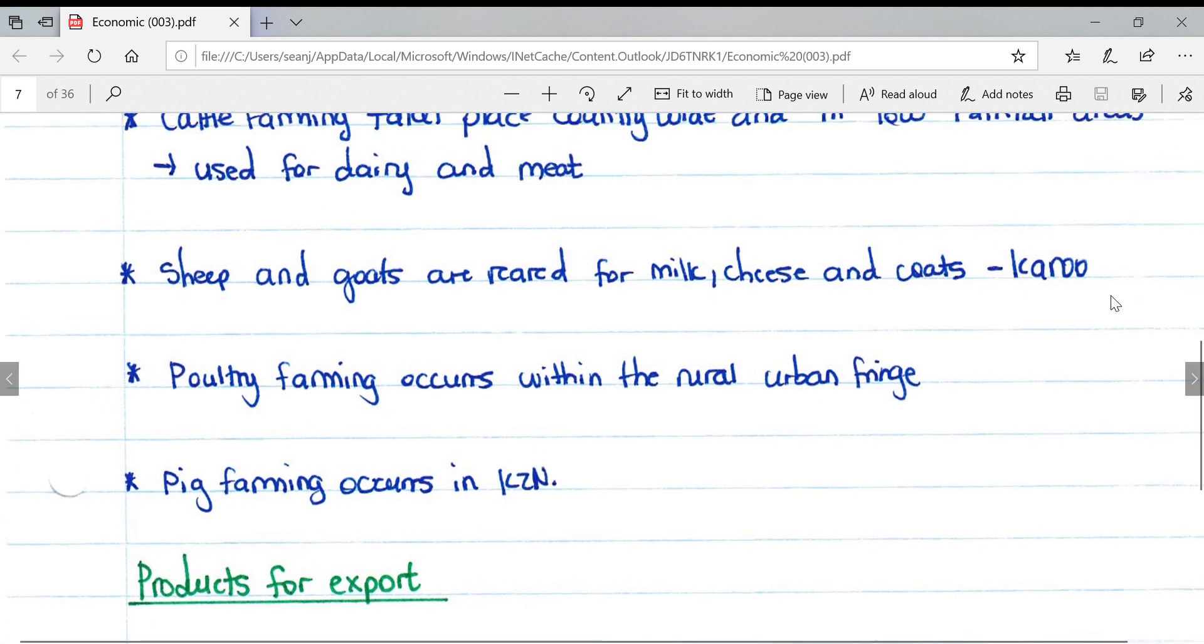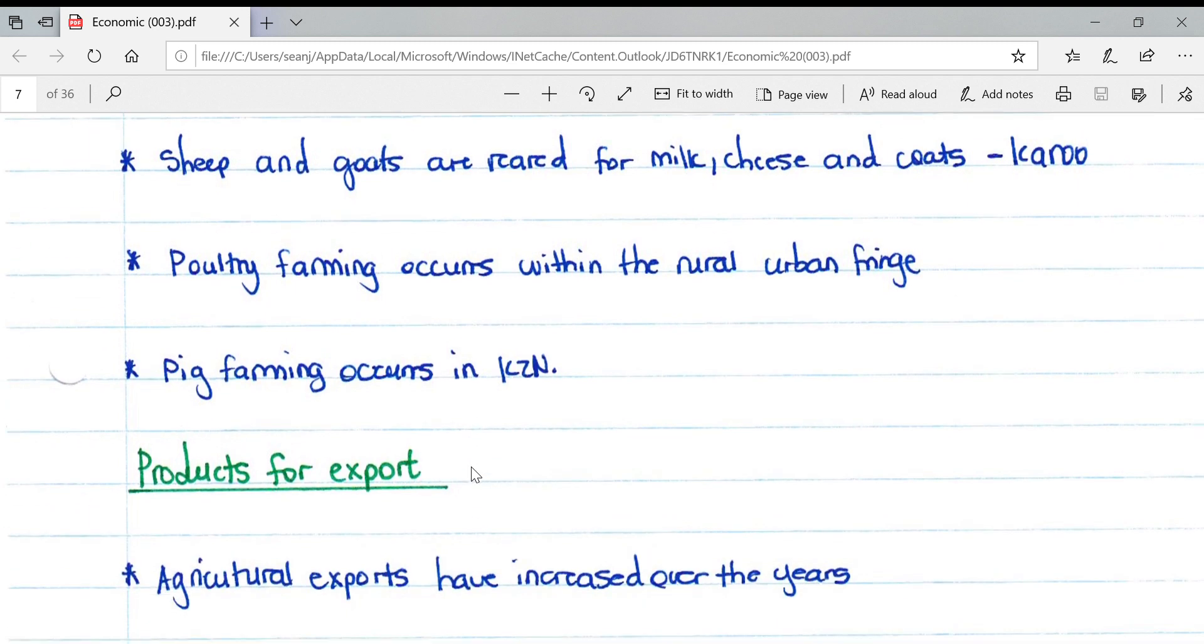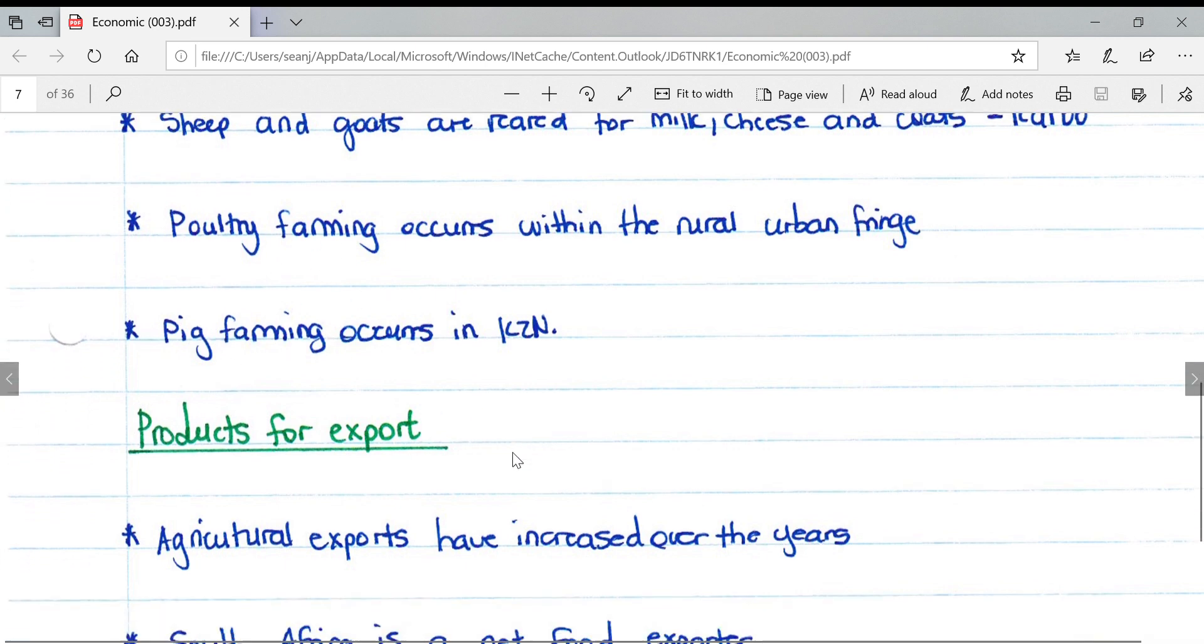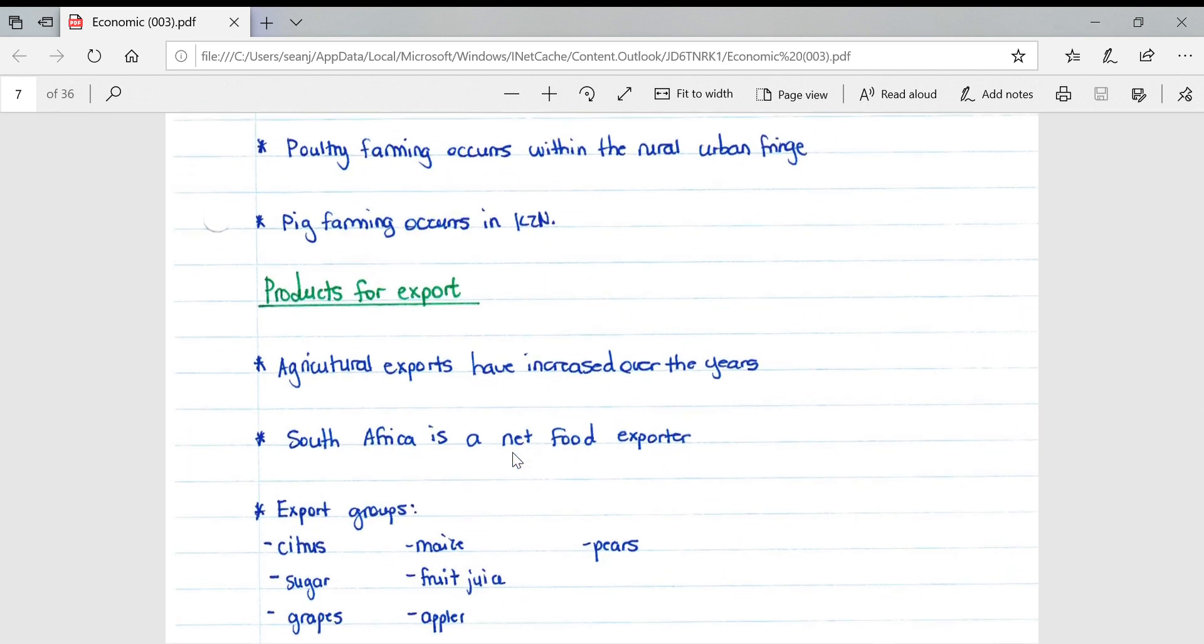Poultry farming, which is chicken farming, occurs within rural-urban fringes. You'll often see those long buildings that look like hothouses - those are most likely poultry farms. Pig farming occurs predominantly in KZN.